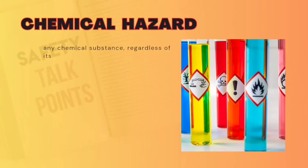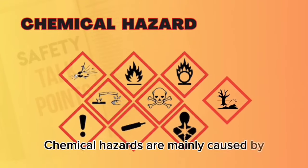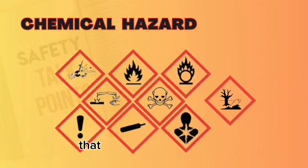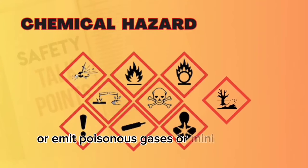A chemical hazard is any chemical substance, regardless of its form, that could potentially cause harm to the human body or even cause loss of life. Chemical hazards are mainly caused by the characteristics of chemical substances that may cause explosions, fires, or corrosions, or emit poisonous gases or mini-particles.